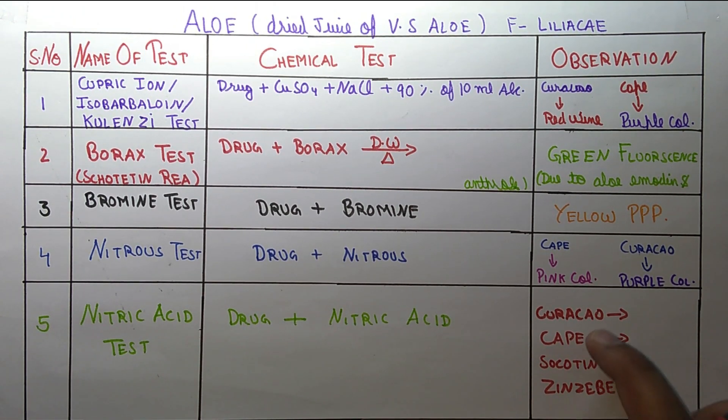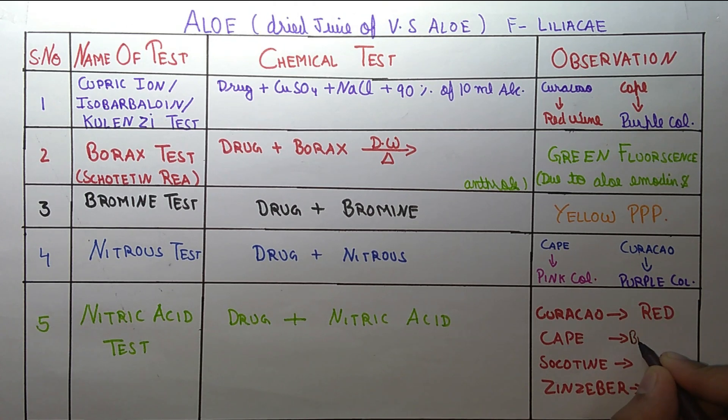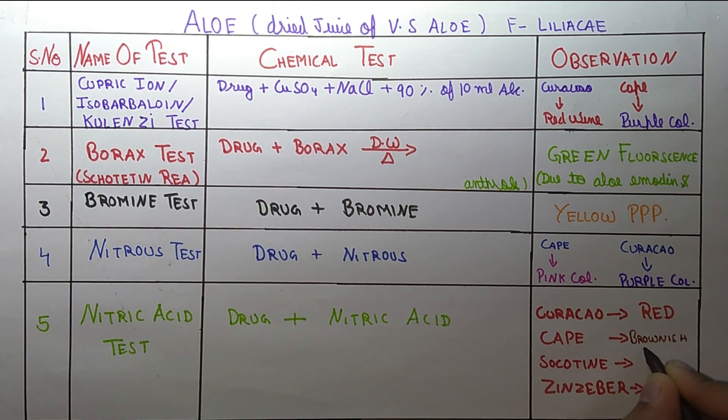So these four varieties give different colors. Curacao gives red color, and Cape gives brownish green color.